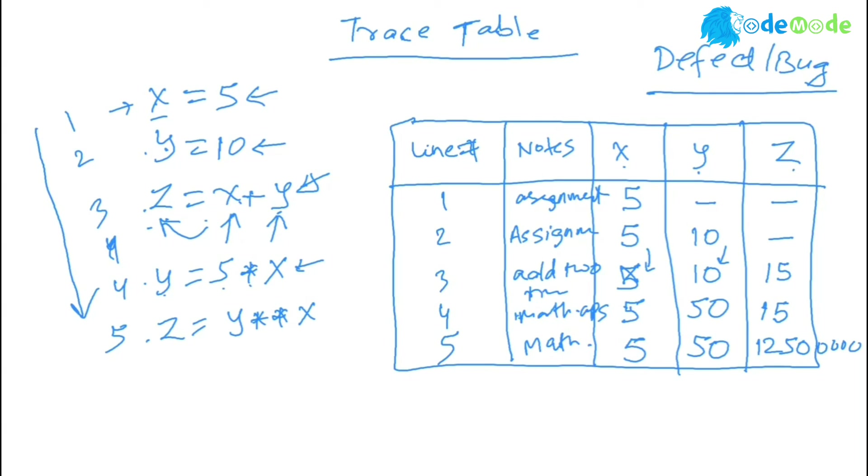So as you can see, the value of what we did is we tracked value of x for each line of code. As line executed, we tracked the value of y, we tracked the value of x, y, and value of z.